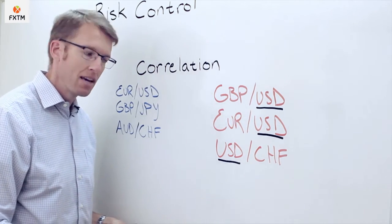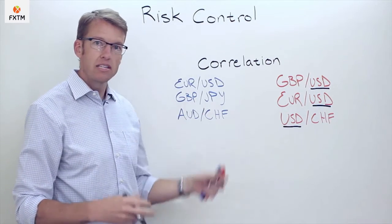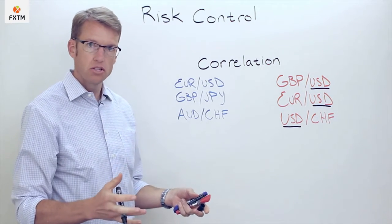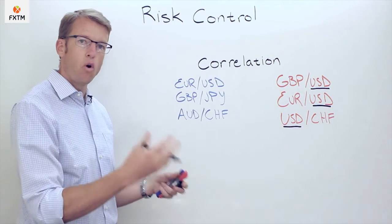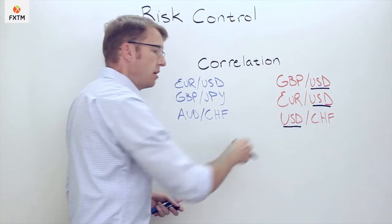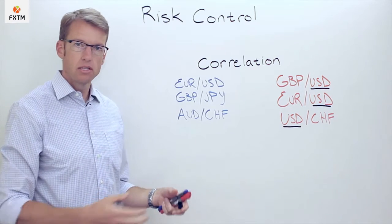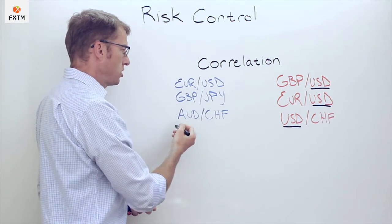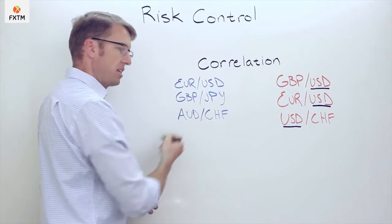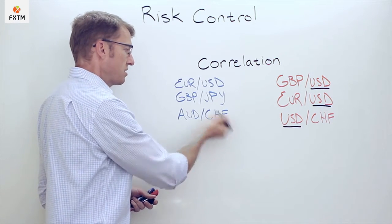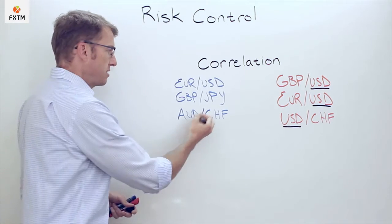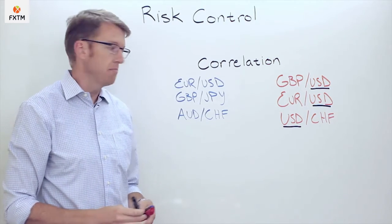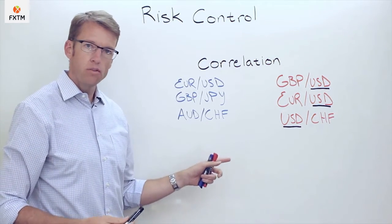Because they start to act like a single trade, that becomes a bit of a problem. Alternatively, imagine a trader is thinking about that correlation problem and trying to avoid overlapping currencies — both on a short-term and longer-term basis. In this example, the trader is long EUR/USD, short GBP/JPY, and long AUD/CHF. In each one of these cases, there is no overlap between any of these currencies on either the quote or base side.